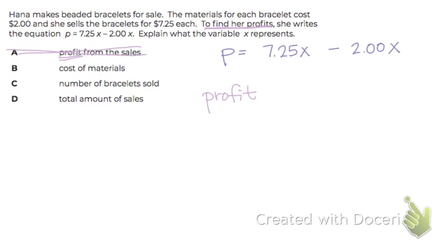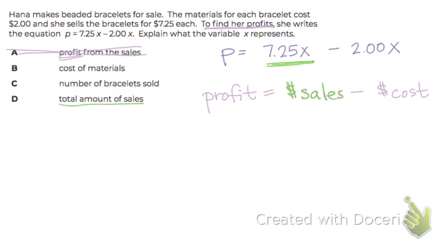Now let's think about how you calculate profit. If you have a business, you earn money from it, but you also have to pay for the materials you're making or selling. To calculate profit, you need your sales — the money you get from your sales — and subtract the money you have to pay to make whatever you're selling. So the first portion of the equation, $7.25 times X, represents the money from our sales — not X alone.